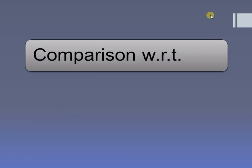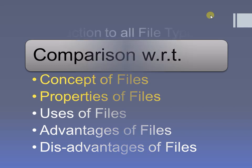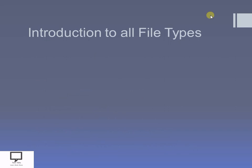Now I will start the main part where I am comparing all these files. I am comparing them with respect to different concepts, covering: the properties of the files, the uses of the files, the advantages, and the disadvantages. The three columns represent sequential files, index sequential files, and direct or random access files respectively.